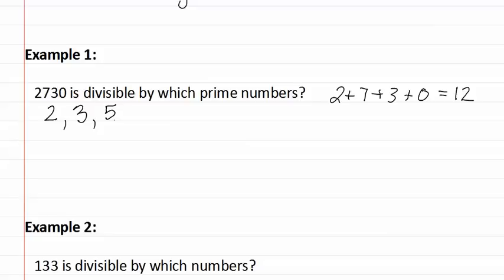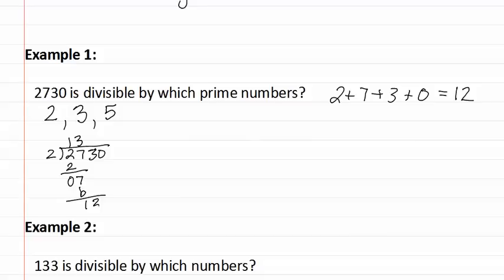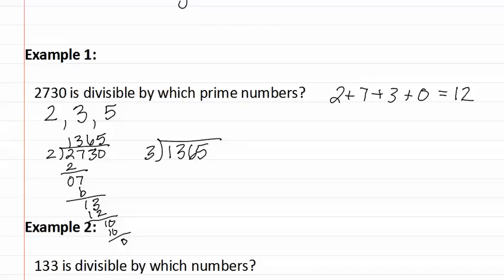To see if there are additional numbers that it is divisible by, we can start dividing the number by each of the numbers we have already found. Starting with two: two goes into two once, two goes into seven three times, two goes into thirteen six times, and two goes into ten five times. Next, we take 1365 and divide it by three. Three goes into thirteen four times, three goes into sixteen five times, and three goes into fifteen five times.